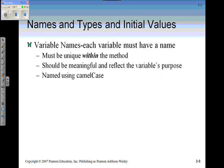Variable names—each variable must have a name. It must be unique within the method, so that means you cannot have two variables named number. It should be meaningful and reflect the variable's purpose. For example, in a tutorial, you want to know the number of jumps, so you're naming the variable numjumps, as well as using the camel case like we've used in Chapter 2 when naming objects and methods.